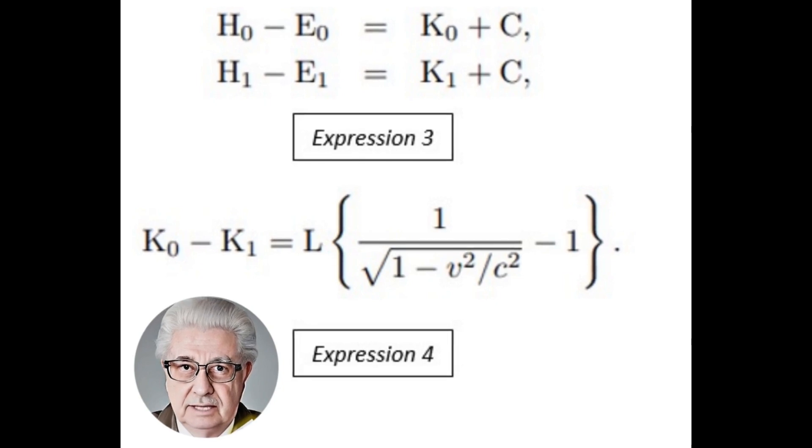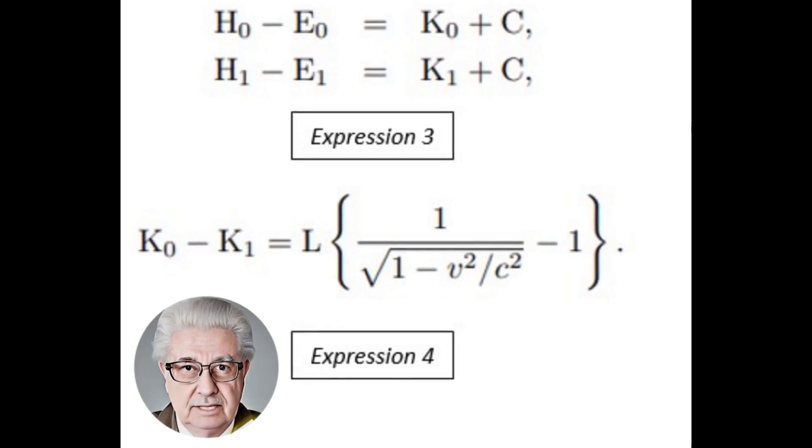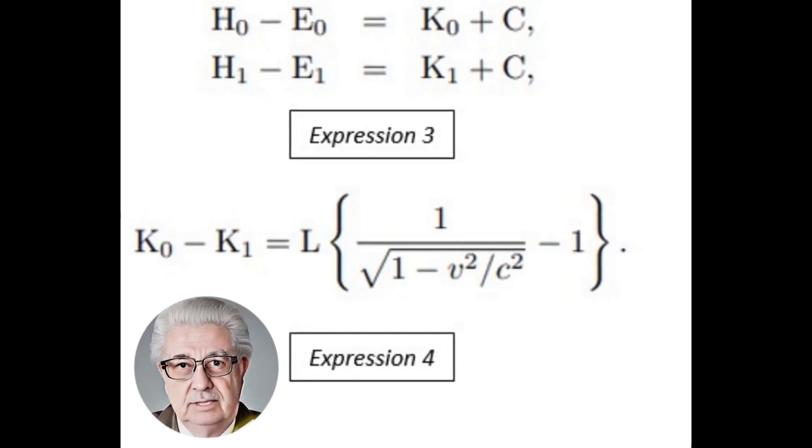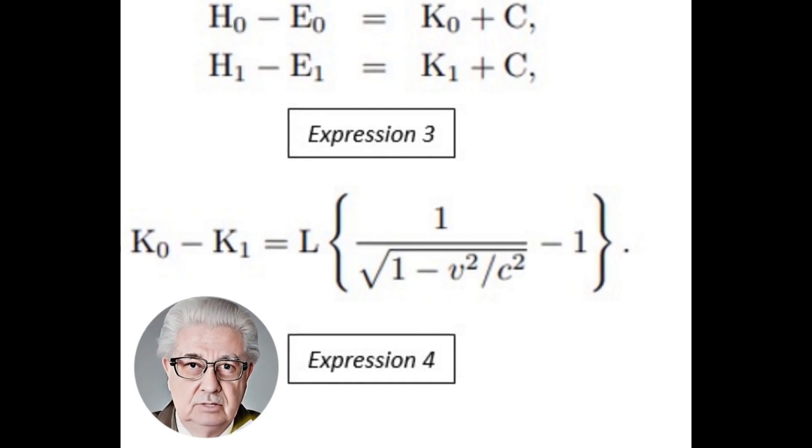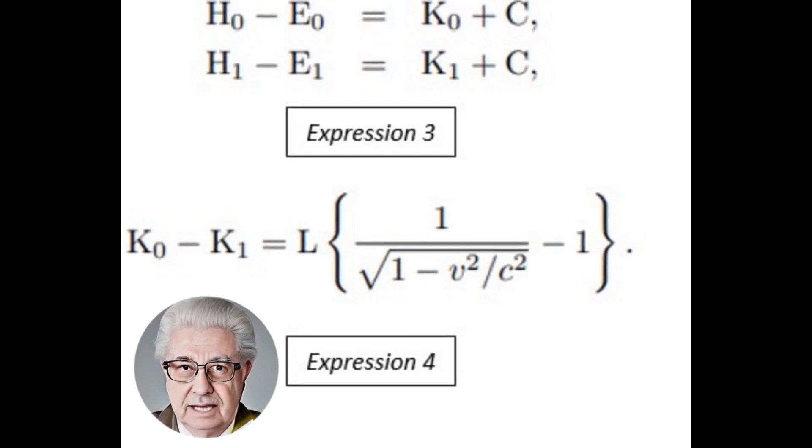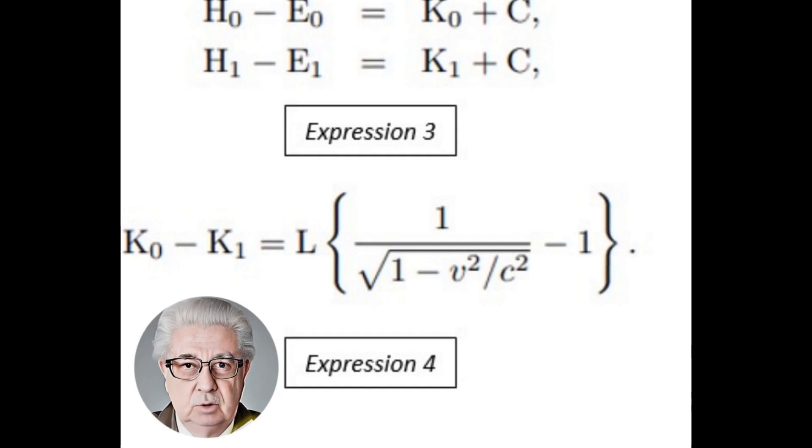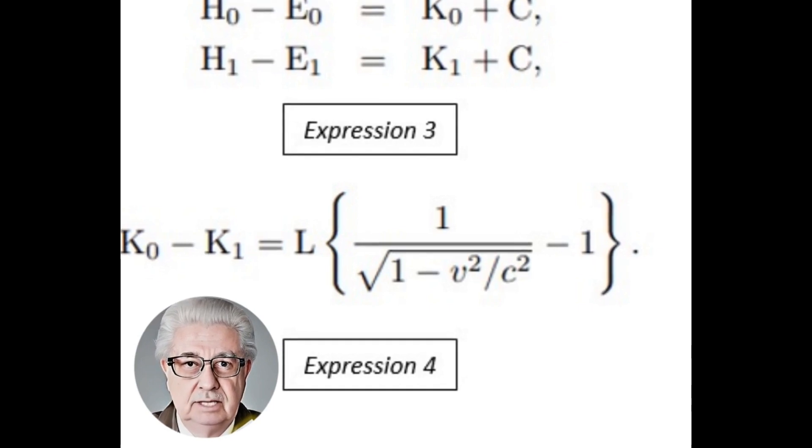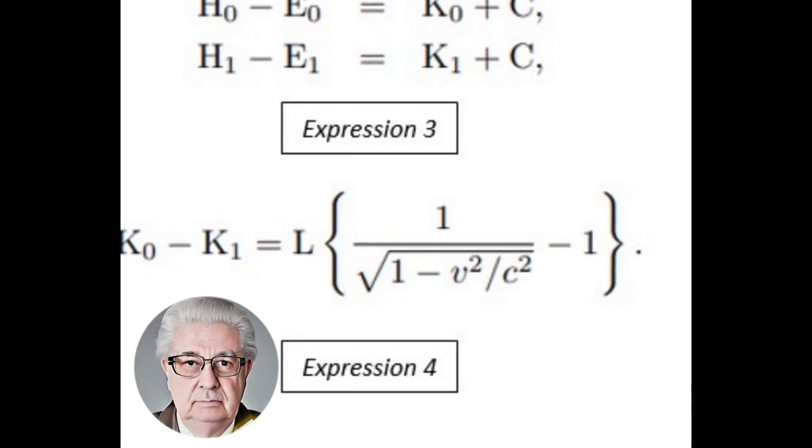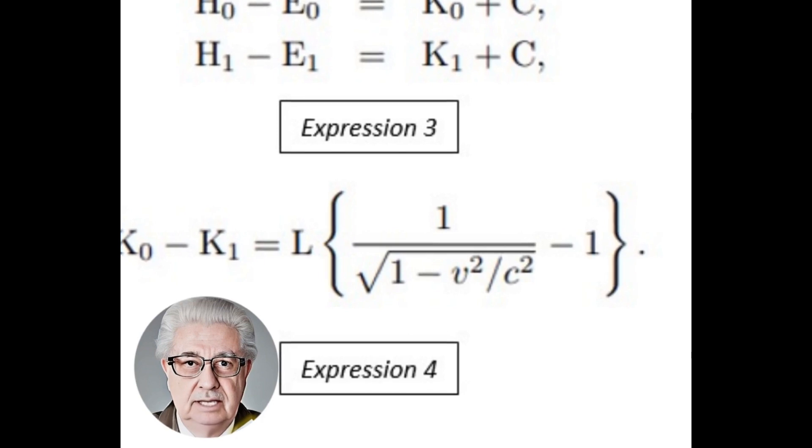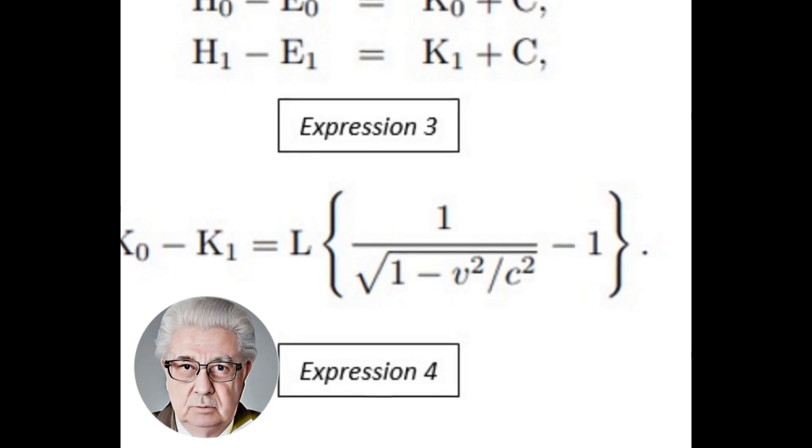Indeed, from expression 3, it can be deduced that the decrease in the kinetic energy of the body with respect to the system at rest is equal to expression 4. This shows that the emission of light has an effect on the kinetic energy of the body, and that this decrease is independent of the properties of the body. In addition, the amount of decrease in kinetic energy depends on the speed of the body.